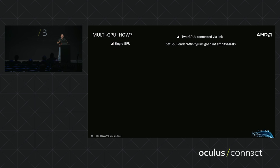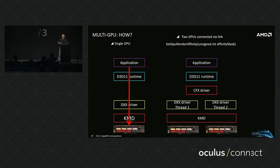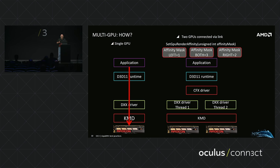Let's look at the software stack internals. For single GPU, it's straightforward: application calls D3D11 runtime, runtime calls the AMD DXX driver, which calls the kernel driver, and everything goes to hardware. For multi-GPU, the driver has two instances of DXX running on separate threads, allowing broadcast of commands to both GPUs simultaneously. When you want to select which GPU a command goes to, you use masks — mask 1 goes to the first GPU, mask 2 goes to the second, or mask 3 broadcasts to both simultaneously.